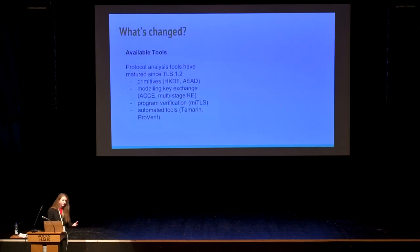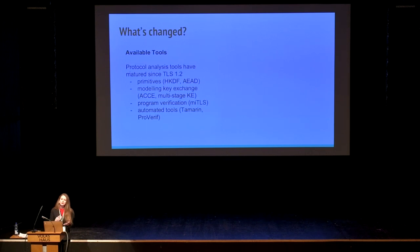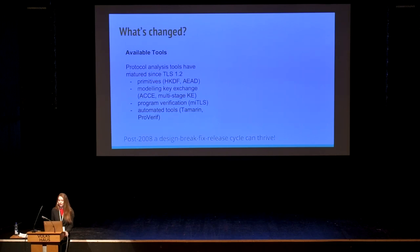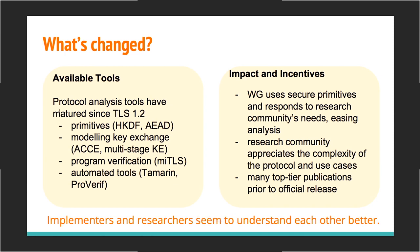What has enabled this highly collaborative, more proactive process? Protocol analysis tools have matured in the areas of primitives, modeling, and automated tools, and because these tools are now mature they can be used in an ongoing design process. The working group now relies on secure, well-analyzed primitives and responds to the research community's needs, while the research community has started to appreciate the complexity of the many use cases for TLS 1.3 — implementers and researchers are starting to understand each other better.